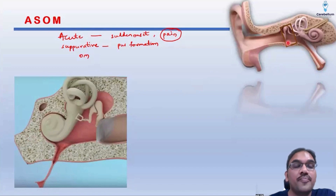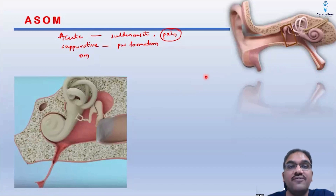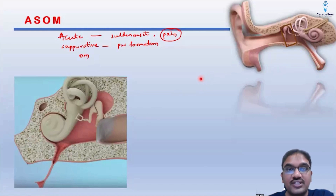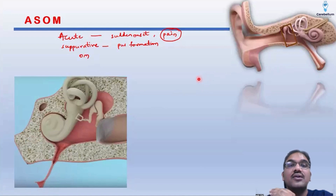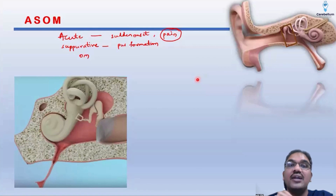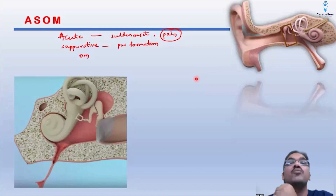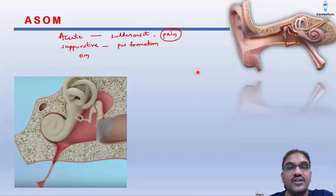That's how the middle ear gets repeatedly infected whenever there is an acute upper respiratory tract infection. Also, in children, the Eustachian tube is short, wide, and straight — so that helps even more for easier and faster spread of the infection from the nasopharynx into the middle ear.